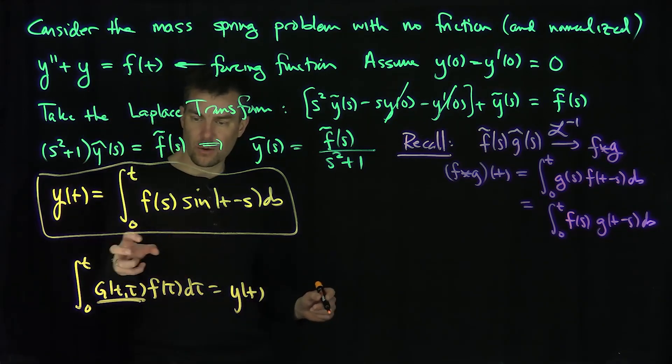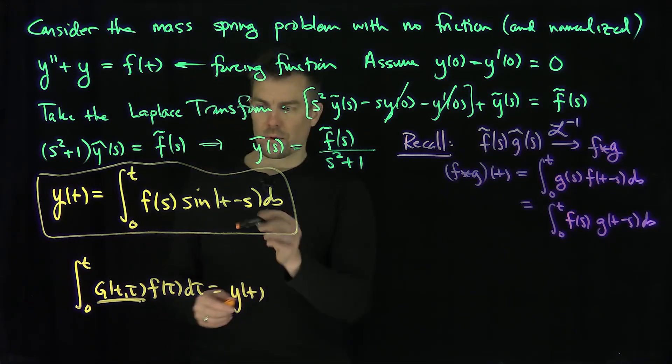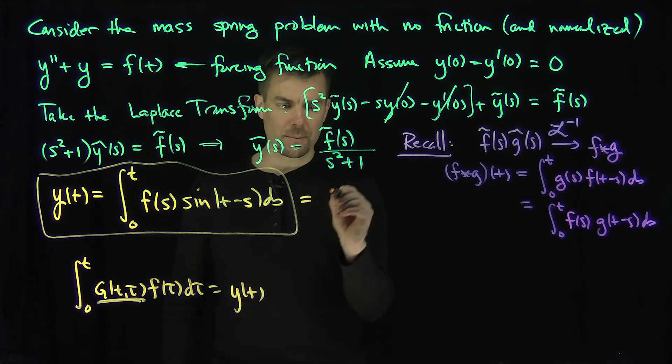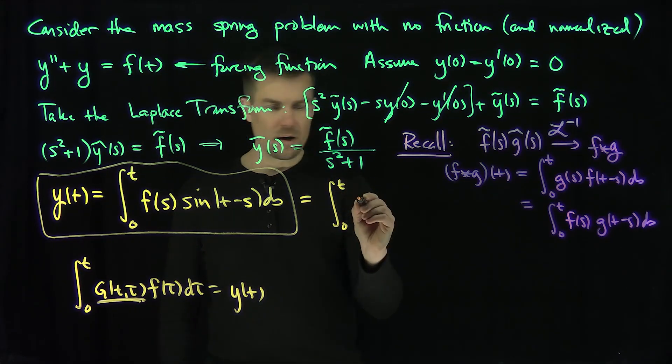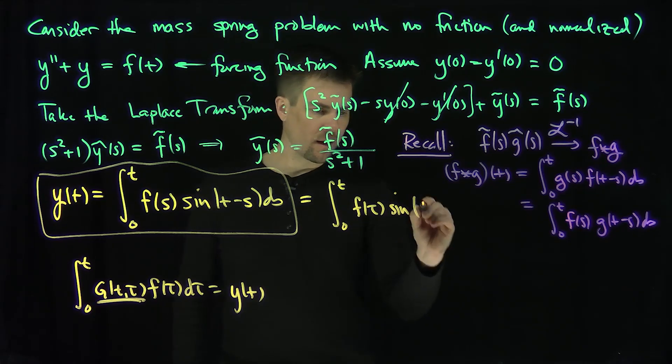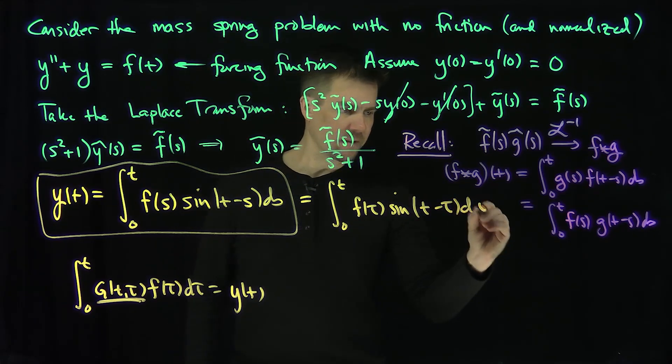So of course, what is this over here? Of course, it has to be 0 when t is less than tau, right? So of course, I just have s's over here. I can easily change these s's to tau. So this is exactly the same thing as the integral from 0 to t of f of tau, and then sine of t minus tau, d tau.